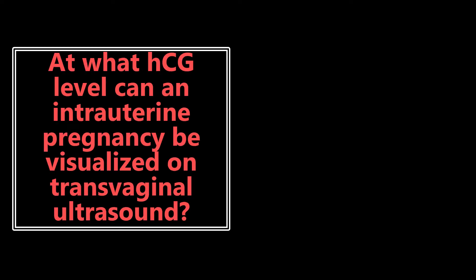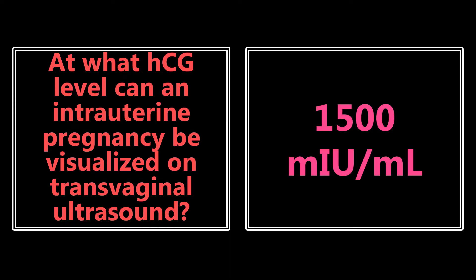At what HCG level can an intrauterine pregnancy be visualized on transvaginal ultrasound? The number may vary a little bit, but it's typically 1,500 milli-international units per milliliter — it can be up to about 2,000, with a range of 1,500 to 2,000. The lower limit that you want to know is 1,500.